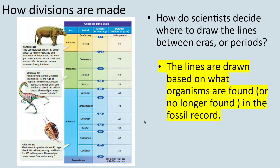What separates the Paleozoic from the Mesozoic, or the Mesozoic from the Cenozoic? The lines are drawn based on what organisms are found in the sedimentary rock — or are no longer found in it. We have the line separating the Precambrian and the Paleozoic because we saw this big explosion in multicellular life: very little in the Precambrian, then more and more appearing.